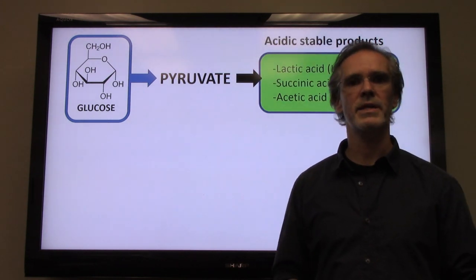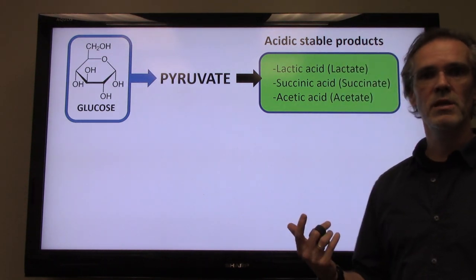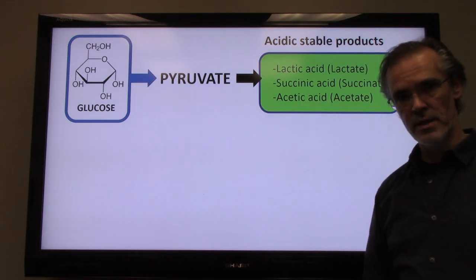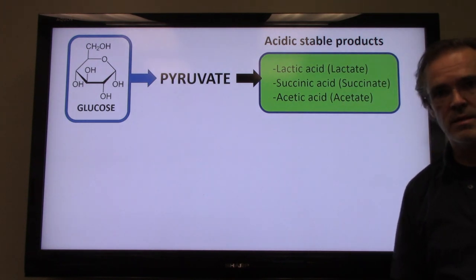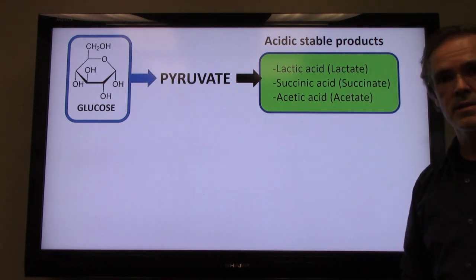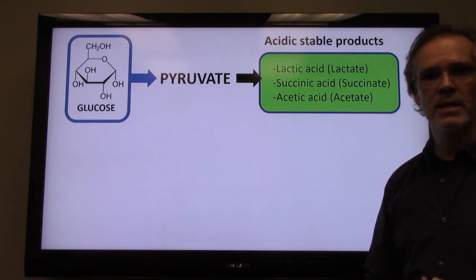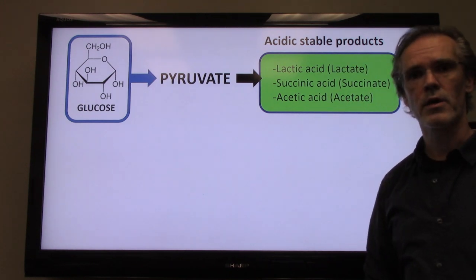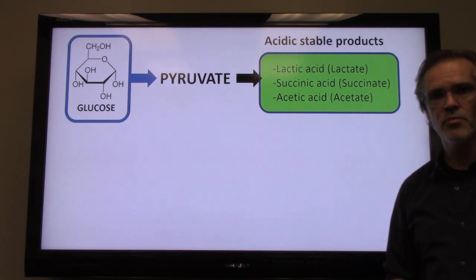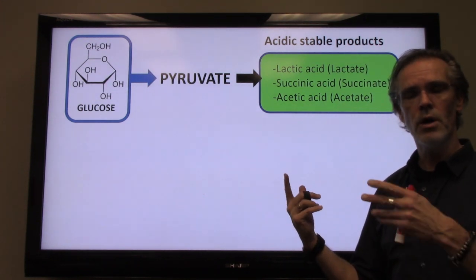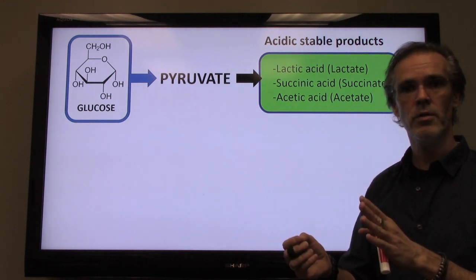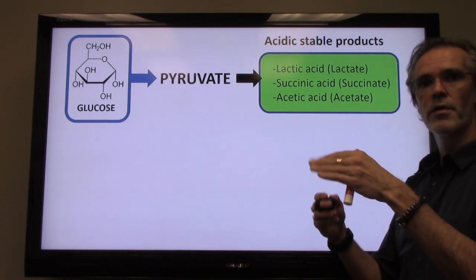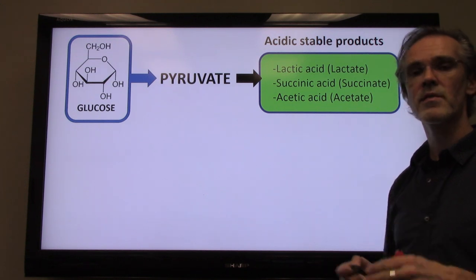One outcome that can happen is that certain bacteria, including E. coli, use pyruvate and ferment it to produce different types of acidic molecules. What we have here is lactic acid, succinic acid, and acetic acid - also referred to as lactate, succinate, and acetate. These are called stable acidic products, meaning there is no further metabolism of these molecules. The bacteria produce them, they stay in the tube, and remain as stable products.